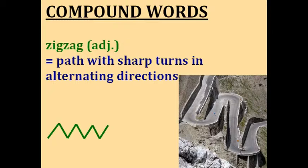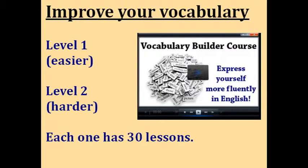So you've just learned some compound words from A to Z. If you'd like to continue improving your vocabulary, you'll really enjoy the Vocabulary Builder courses at Espresso English. There are two levels — level one, which is easier, and level two, which is harder — and each level has 30 lessons. Level one focuses on essential everyday words for things in daily life, work, study, travel, describing people, describing the world, and so on. Level two goes deeper into these subjects and also has lessons on more advanced topics like binomials, metaphors, word roots, and prefixes and suffixes.